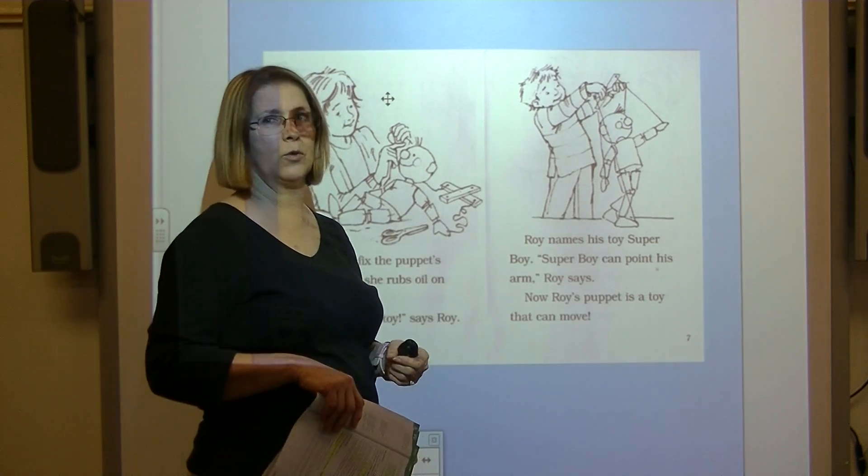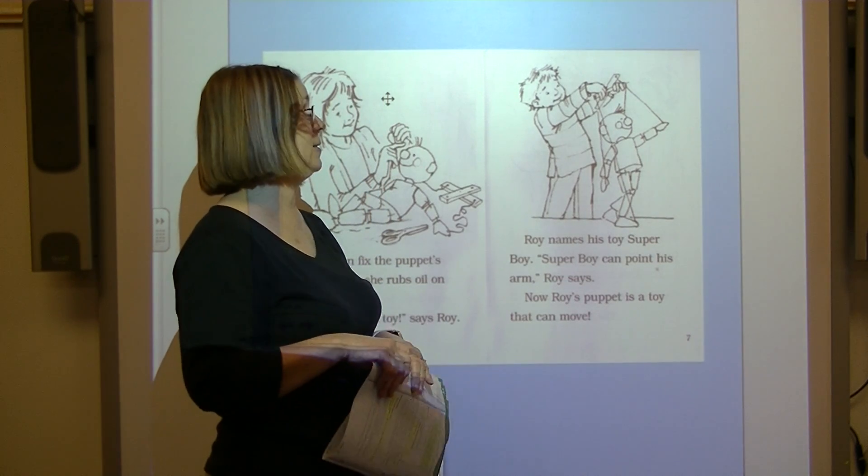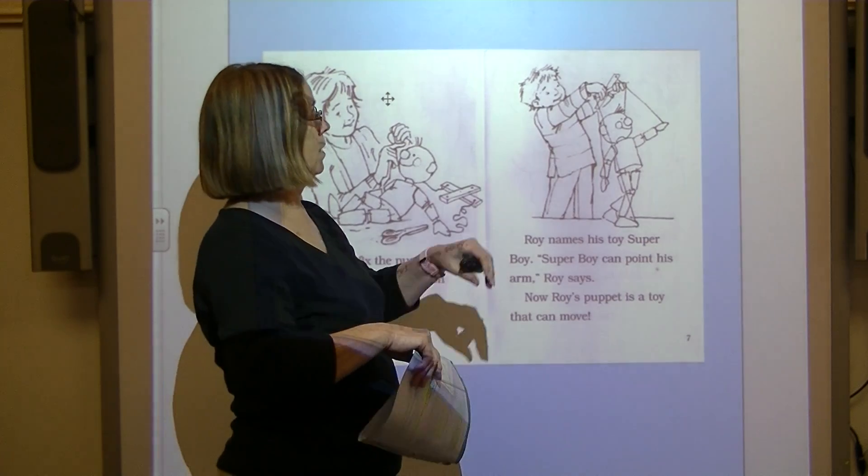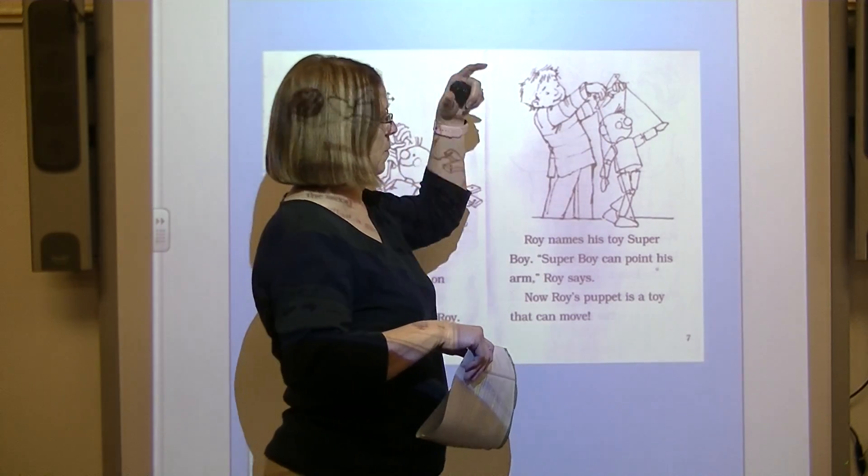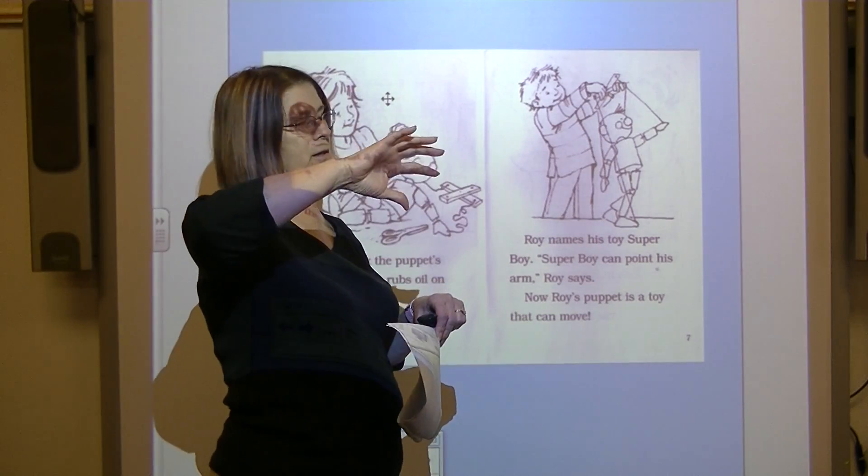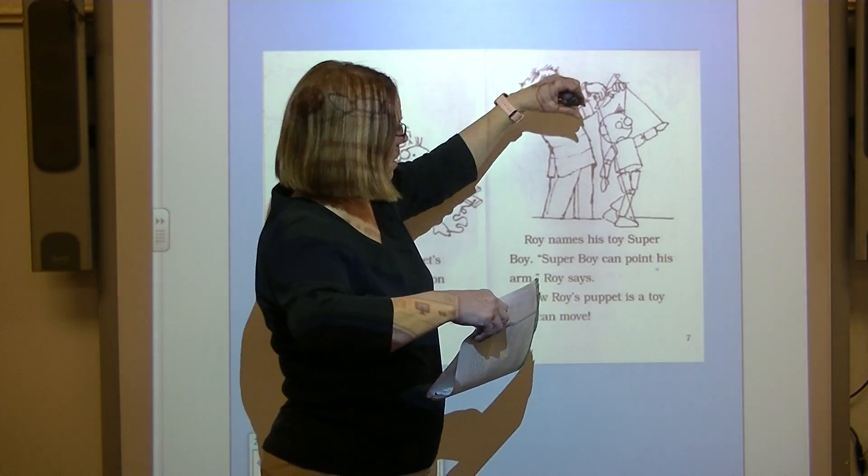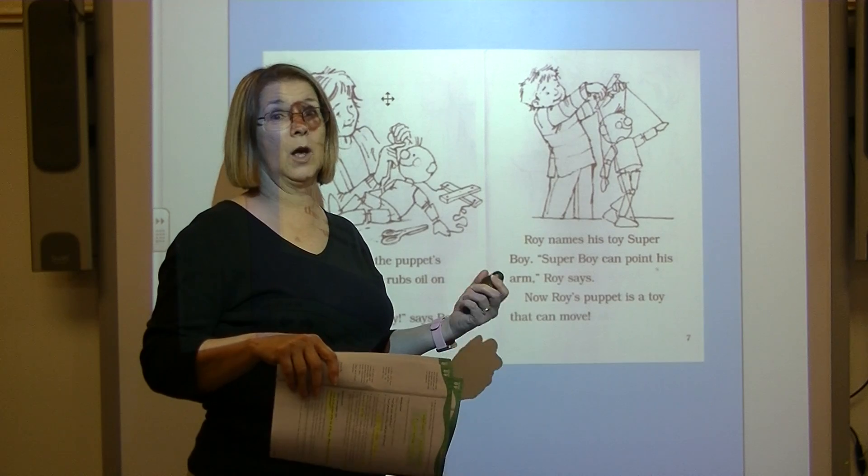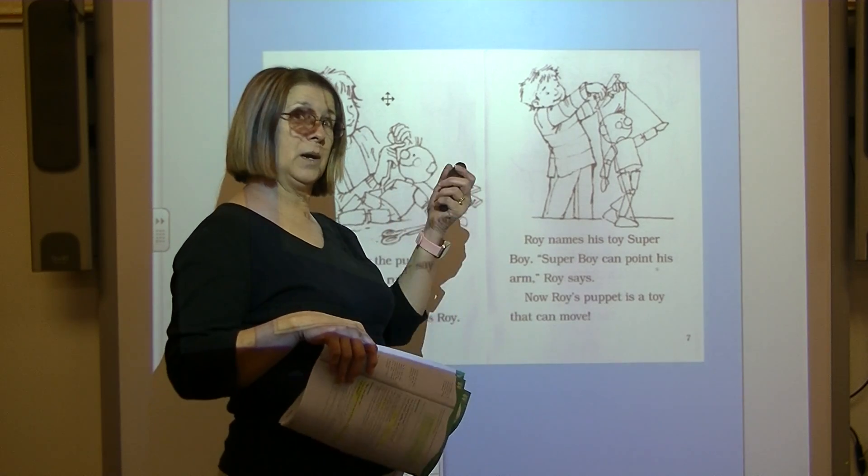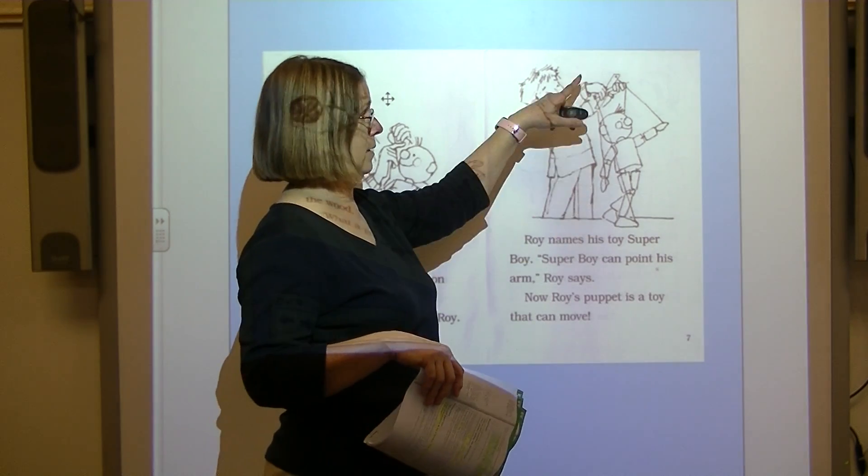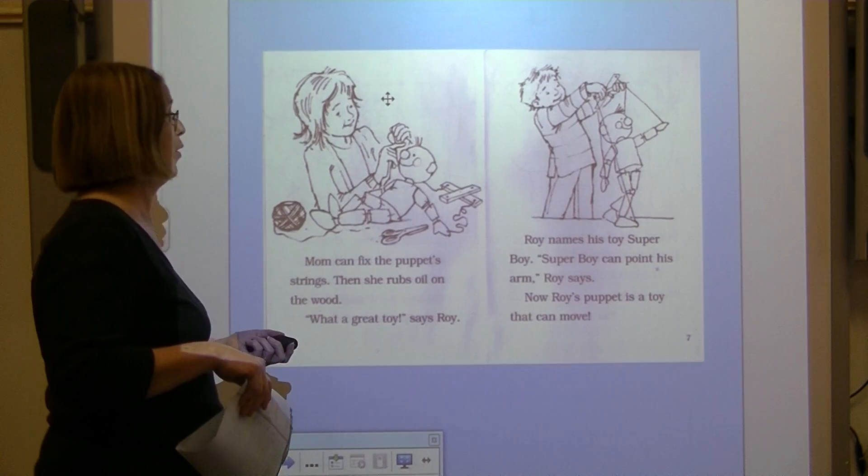Now Roy's puppet is a toy that can move. I have a Christmas ornament that is like this. It's got little wooden slats at the top and the strings. Just hold it, and you can move the arms and legs by moving this part up here. And I have one that's a soldier that hangs on my Christmas tree that's made like this. But I didn't paint it. It was already painted.